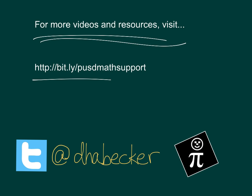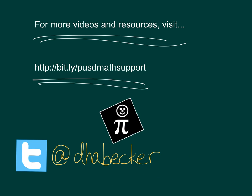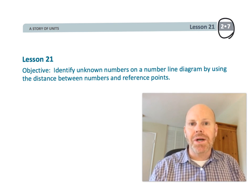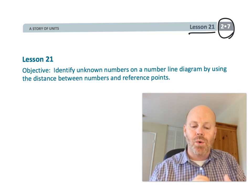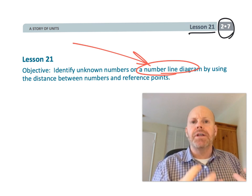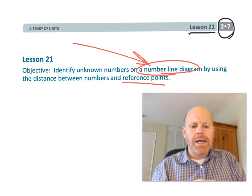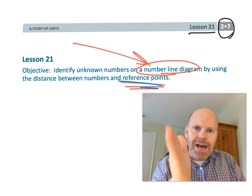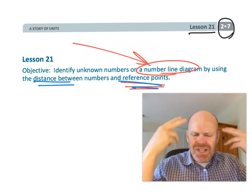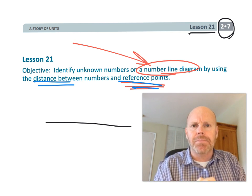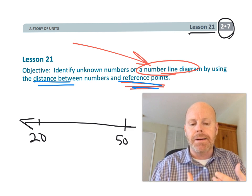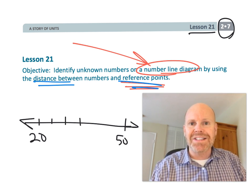This is second grade module 7 lesson 21. In this lesson, students are going to be learning about number lines — the idea of how to recognize the parts of a number line: the beginning value, an ending value, and what the value of each interval is. Just all the ideas of a classic number line that adults have come to assume and understand, but we're going to really make these hit home for our students in this lesson.